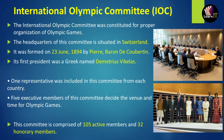The first president's name was Demetrius Vikelas. One representative is basically from each country, and it has five executive members of these committees which decide the venues and the time for the Olympic Games. The committee also has 105 active members and 32 honorary members.